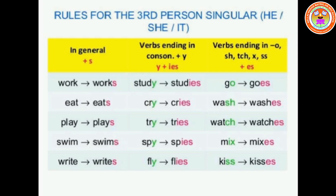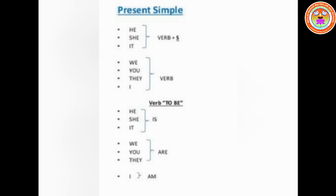Remember these rules when you are using simple present tense. To recap: for he, she, it — action verb plus -s, -es, or -ies. For we, you, they, and I — no change in verb; verb remains the same. Now let us see the simple present tense for be verbs. Be verbs show a state of being: 'is' is used for he, she, it; 'are' is used for you, we, they; 'am' is used for I. It is very simple rules.